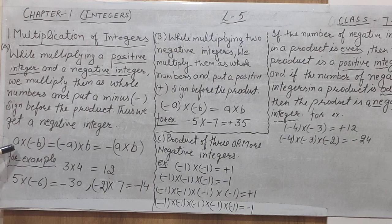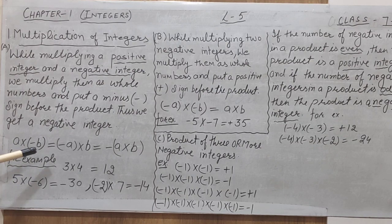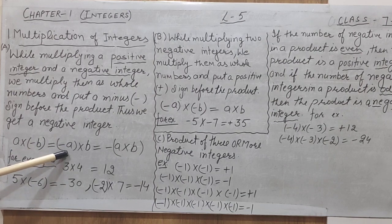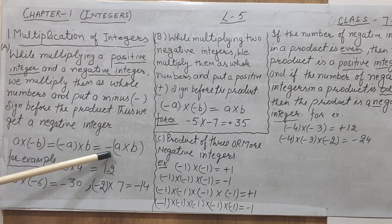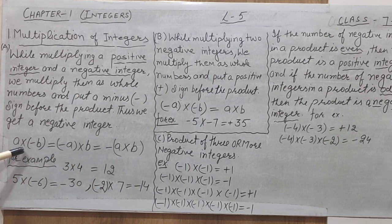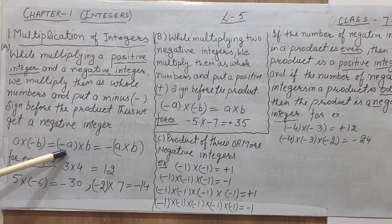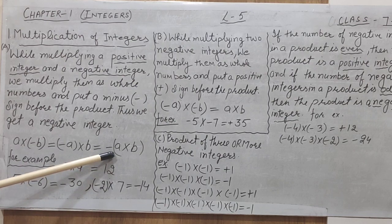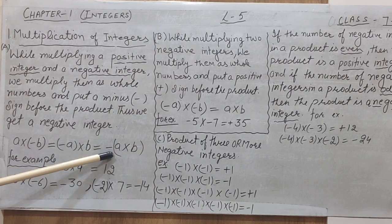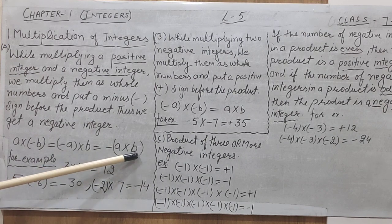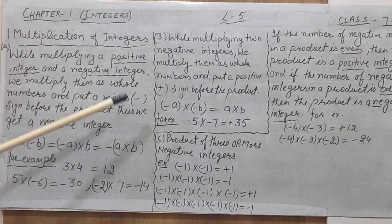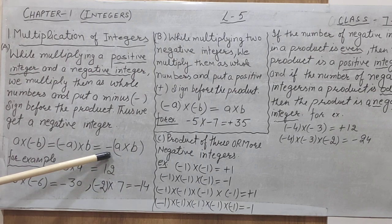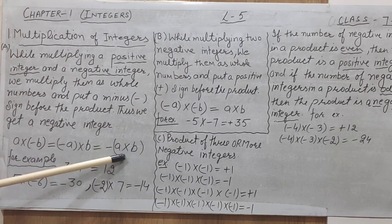Now, to understand this, let us see the rule. Let a and b be two integers. If a is multiplied with minus b, or minus a multiplied with b, a negative sign is placed outside. This means if a positive sign is multiplied with a negative sign, we get a negative sign, and vice versa. The numbers are multiplied as whole numbers — all numbers are treated as positive — but you must remember the sign.